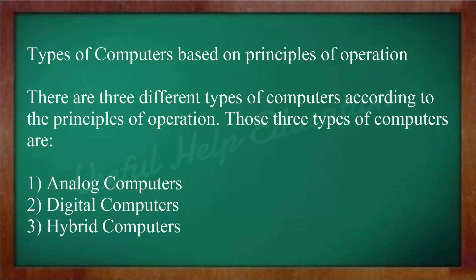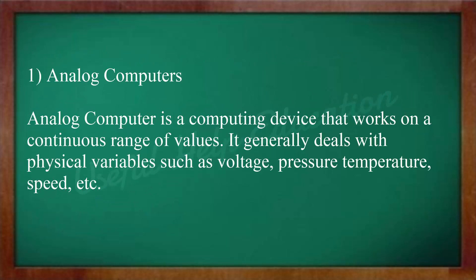Types of computers based on principles of operation. There are three different types of computers according to the principles of operation: Analog Computers, Digital Computers, and Hybrid Computers. An analog computer is a computing device that works on a continuous range of values. It generally deals with physical variables such as voltage, pressure, temperature, speed, etc.